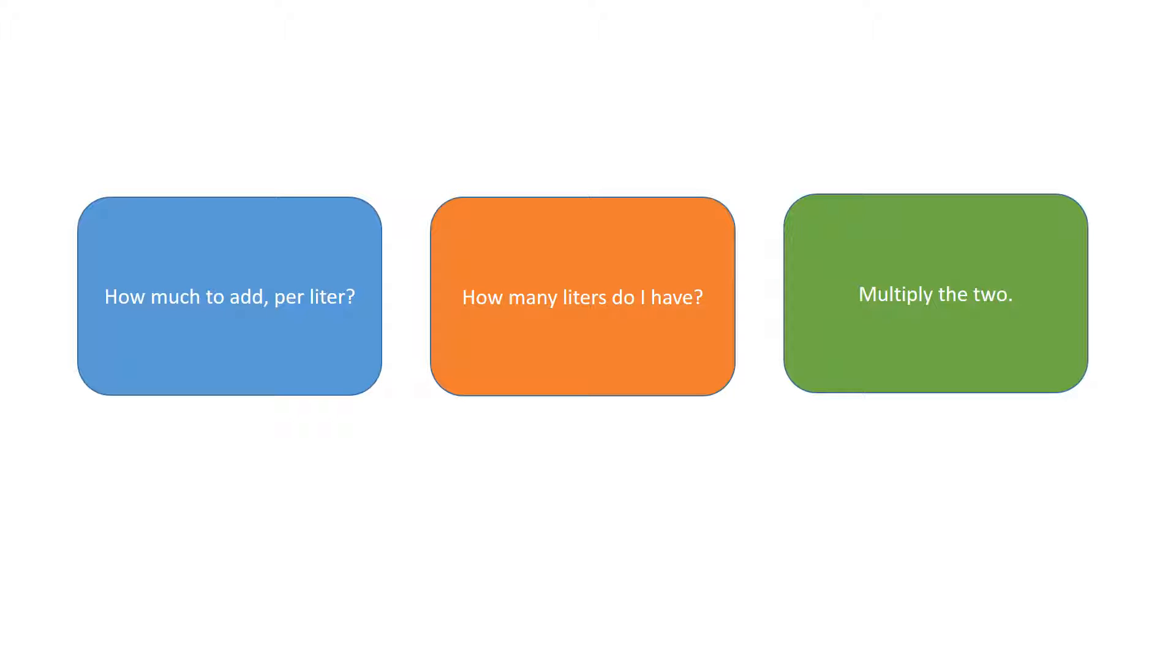So if we're adding acid, we'll figure out how much acid we have now, what our goal is, and then what the difference between what we have now and what our goal is. That's how much to add. And we usually do that per liter. We'll talk about that in a sec.